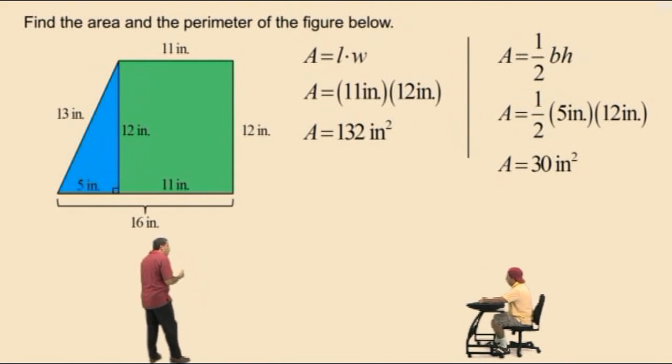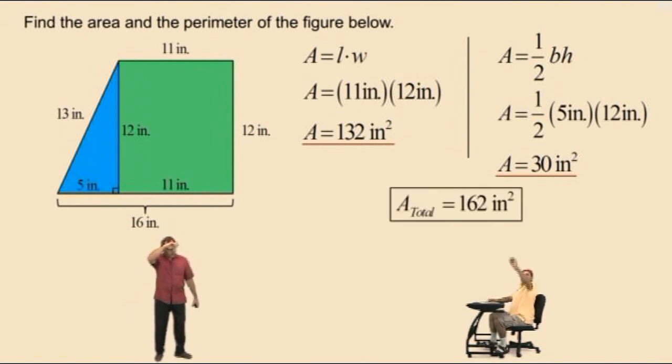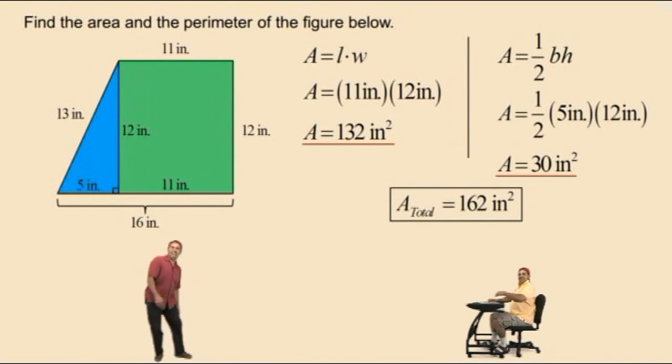Alright, Charlie. Now, to find our total area, we add up our two individual areas. And what did you get, Charlie? 162. That's right. Very nice. We'll see you all again soon.